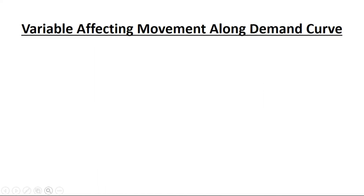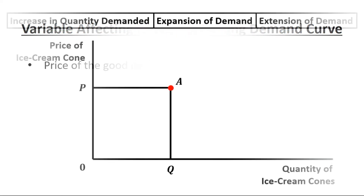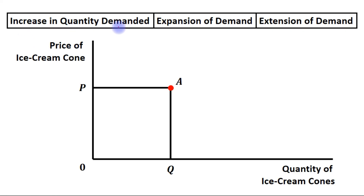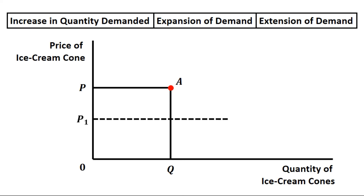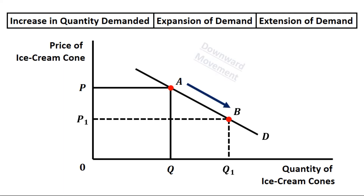Now we will look at the variable affecting movement along demand curve, and there is only one variable that can affect movement along demand curve, which is price of the good itself. Let's first see the case of increase in quantity demanded — also called expansion or extension of demand. Initially the price is OP and quantity is OQ. Now if price of ice cream cone reduces from OP to OP1, then quantity of ice cream cone will be increased from OQ to OQ1. This shows movement from point A to point B, which is a downward movement representing increase in quantity demanded, or expansion of demand.